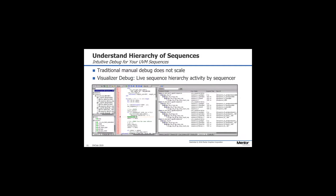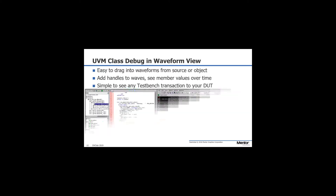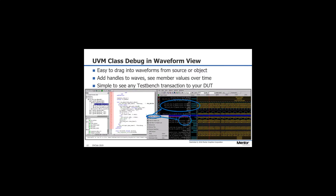For sequences, we have class browsers and class hierarchy browsers — here's a sequence browser that allows you to look at live sequence hierarchies in the design. And then when debugging classes, why not add them to the wave window? The wave window is what a lot of people like to use, so just drag them in. You can add an instance of a class, its virtual interfaces, its class member variables right there in the waveform window alongside all the other data — maybe the DUT — giving a potentially better way of viewing things all in one space.